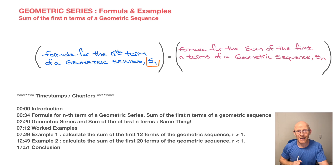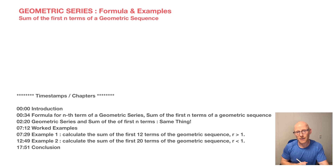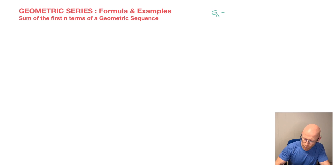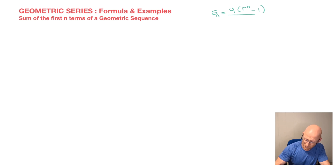So let's go ahead and get started. I'll start by actually stating the formula. Given a geometric sequence, we can calculate the nth term of its geometric series with the formula S sub n, which means the sum of the first n terms, which is equal to the first term of the sequence, u sub 1, times in parentheses the common ratio r raised to the power n, minus 1, all divided by r minus 1.